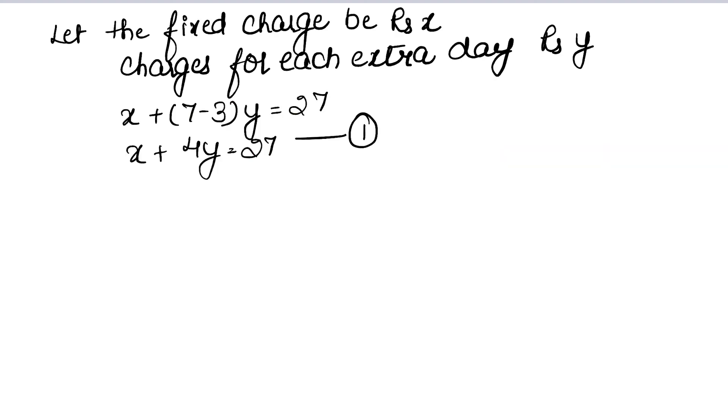So if Tanvi pays the fixed charge, out of 5 days, 3 days are already covered in the fixed charge, and she has to pay 21 rupees. So how much does this become? x plus 2y equals 21. This is our second equation.